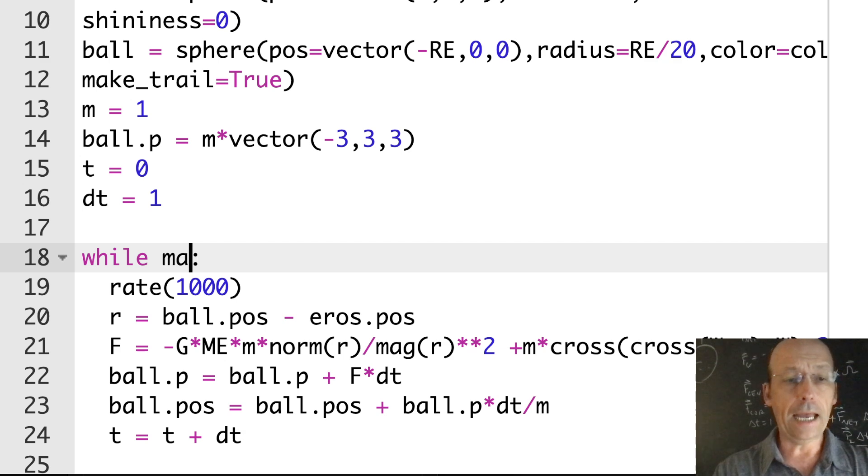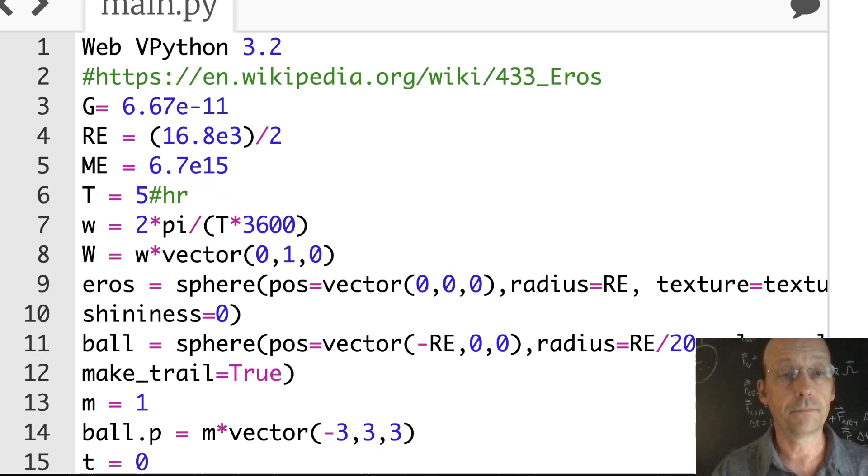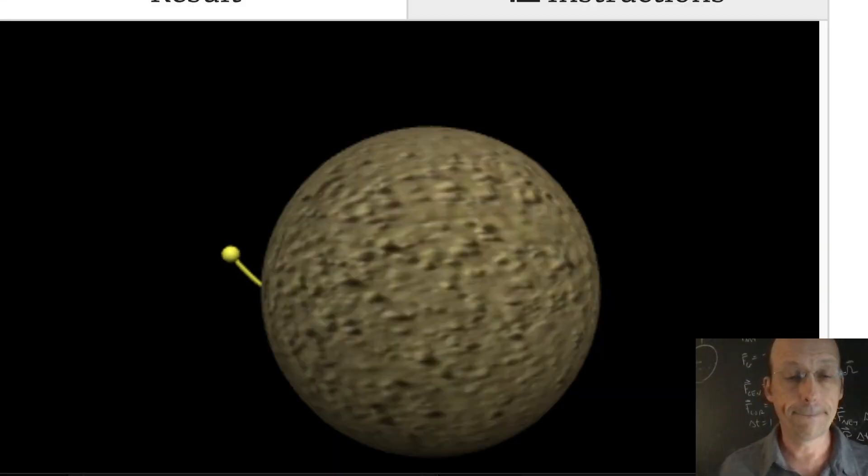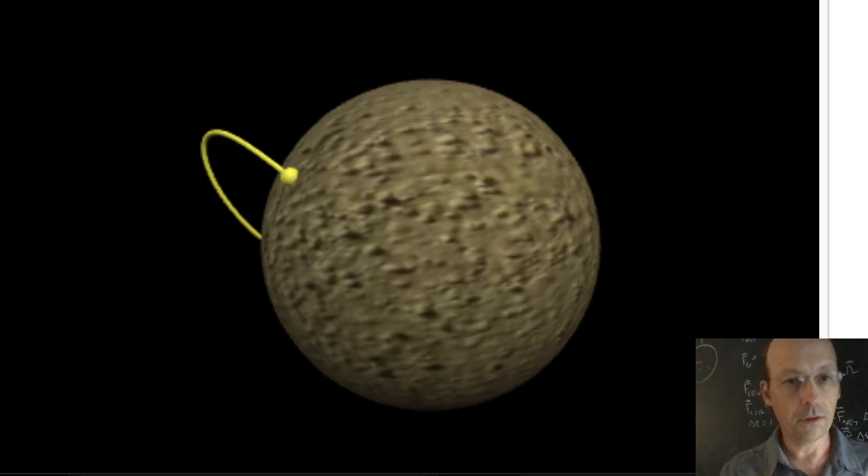Let's run this while mag ball.pos is greater than or equal to RE. It starts at RE, so if I don't include the equal to, it's never going to go anywhere. I can increase the rate because I'm already getting bored. But there we go.